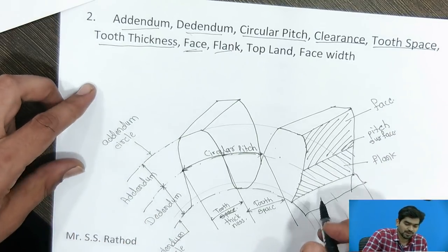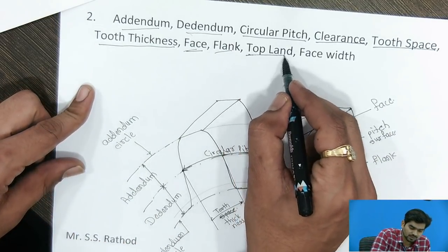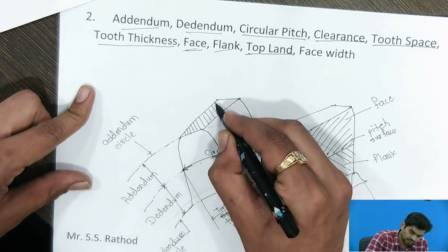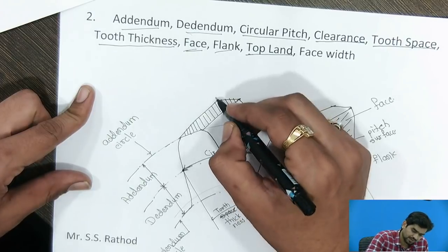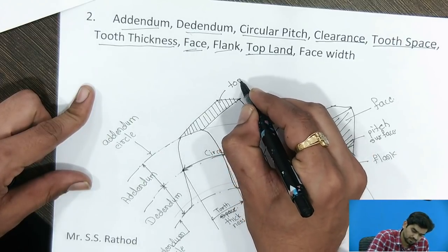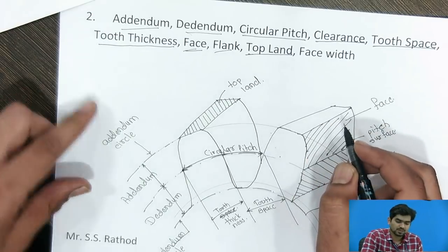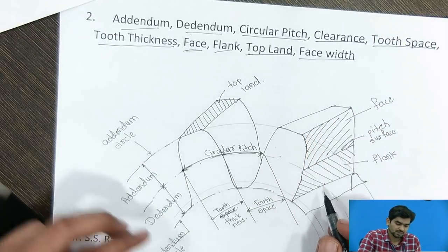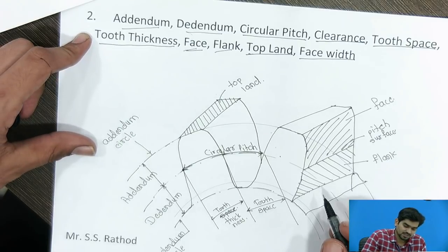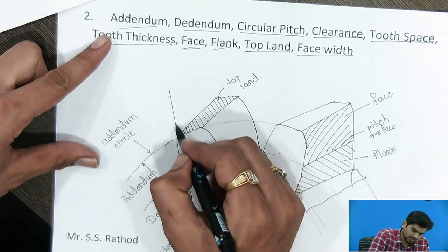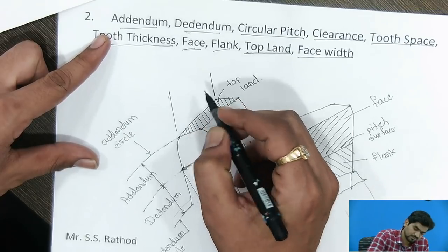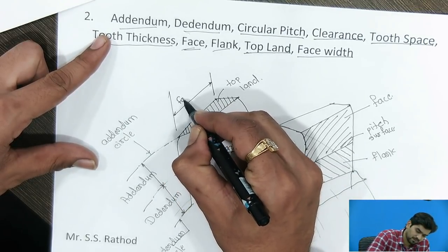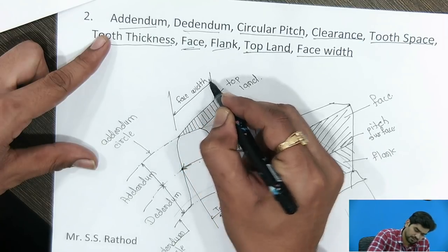Next one is Top Land. The surface above the tooth is called Top Land. Next one is Face Width. Face width is nothing but the axial distance of the tooth along the axis of the gear. This is called Face Width.